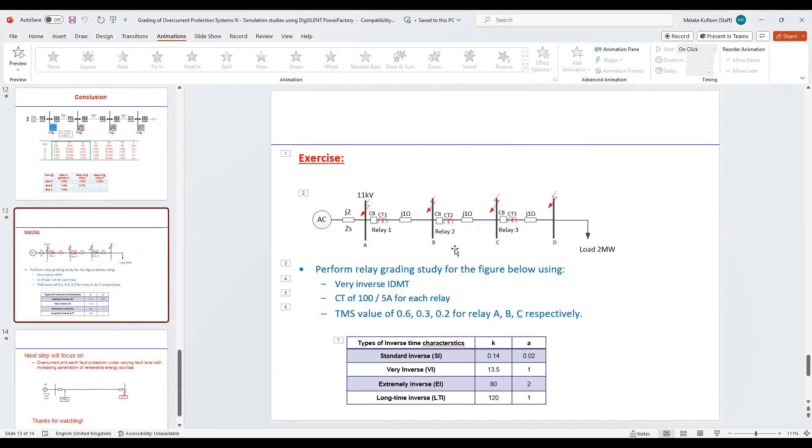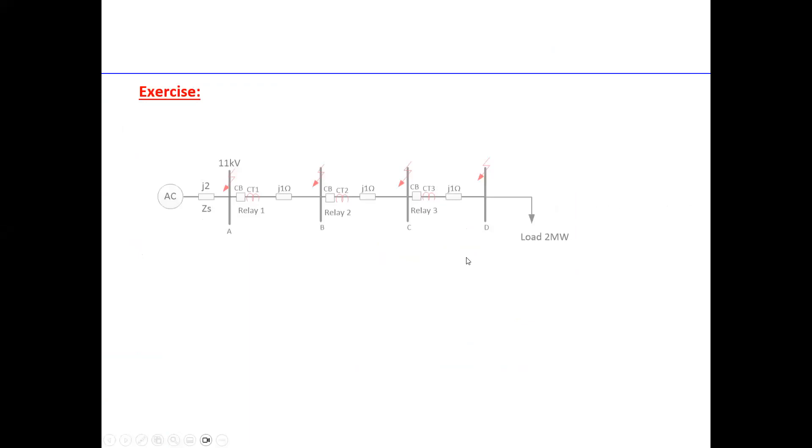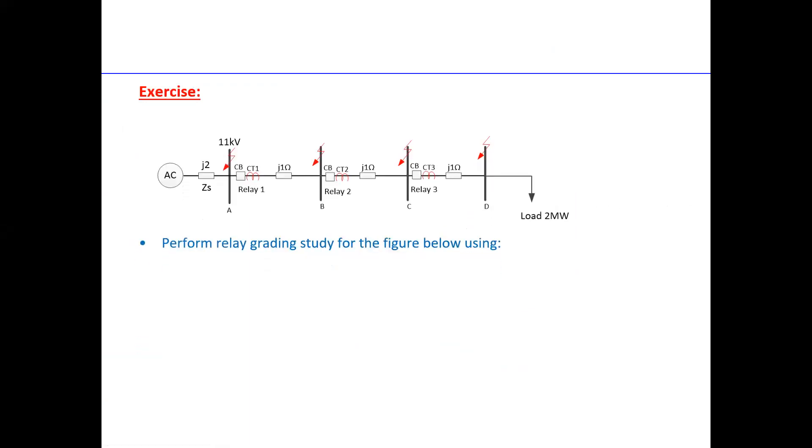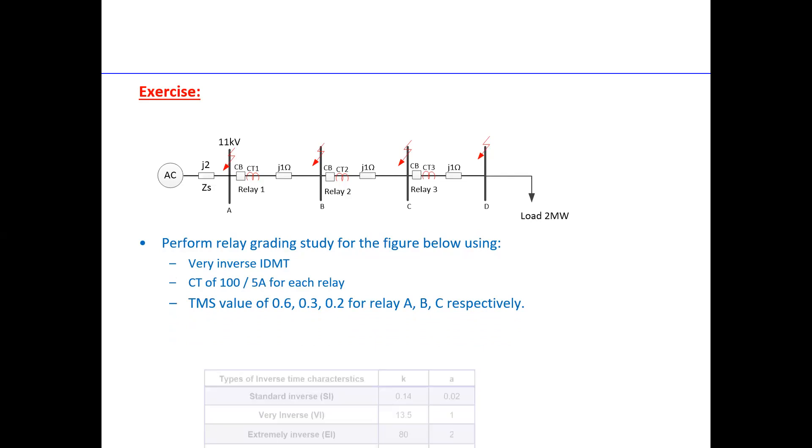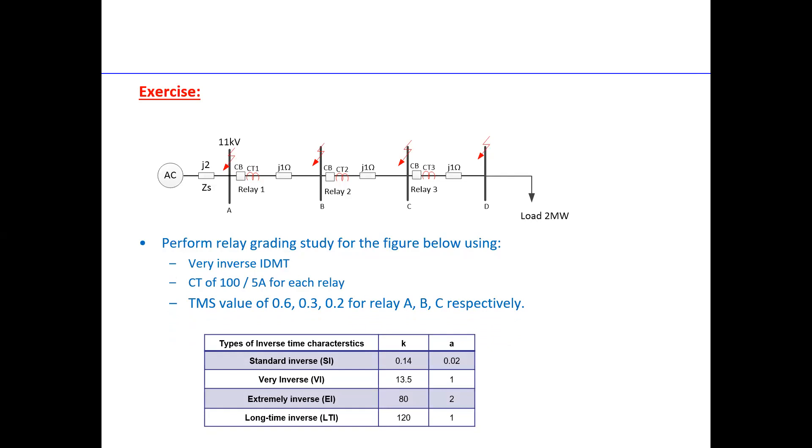What will be the next step? The next step is for you guys to practice. Assume the same network. Perform relay grading study using a very inverse IDMT curve. And of course use CT of 125 amp secondary, instead of one amp, it's now given five amp. And then instead of standard inverse, it's given a very inverse. And then the TMS value of 0.6, 0.3, 0.2 for each relay, for relay A, B, C respectively. You can use this table for very inverse.